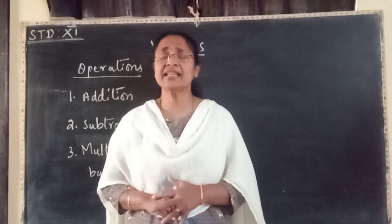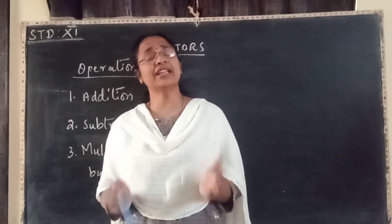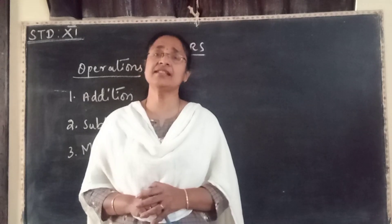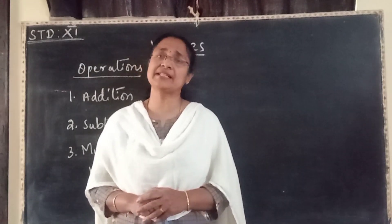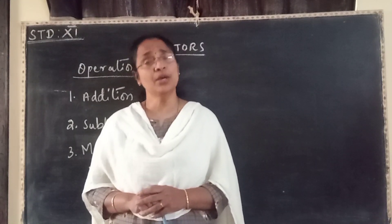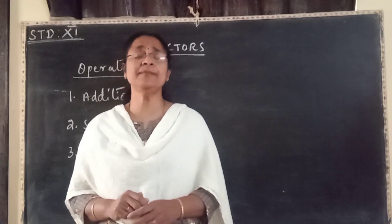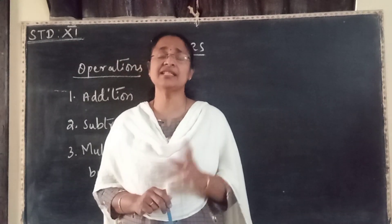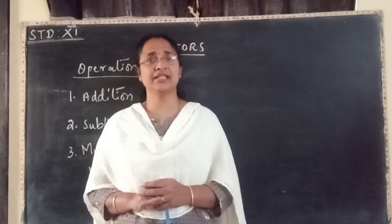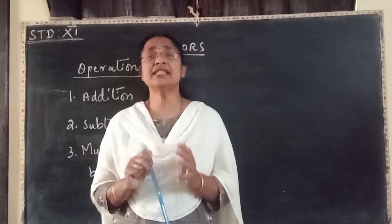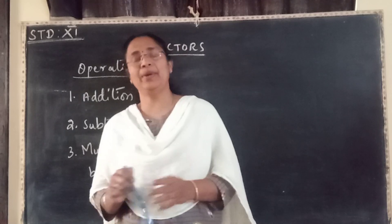We are discussing the topic vector algebra. We already had plenty of introductions and understanding of the concept of what is meant by a vector. So once again, just for recapitulation, you know there are two quantities: vector quantity as well as scalar quantity. What is the difference between scalar and vector?